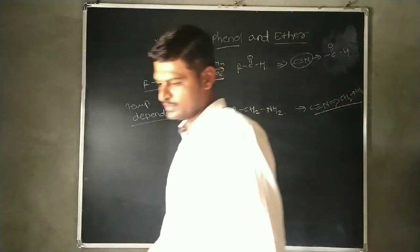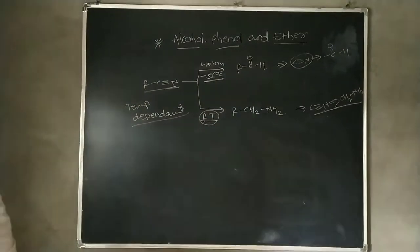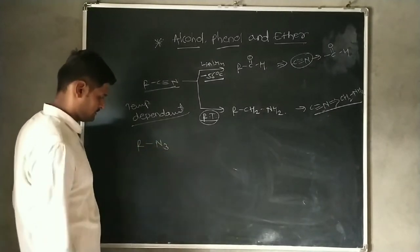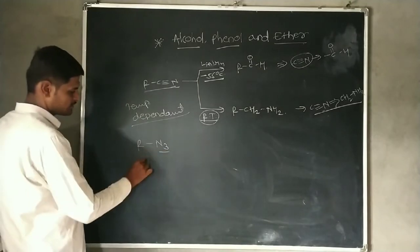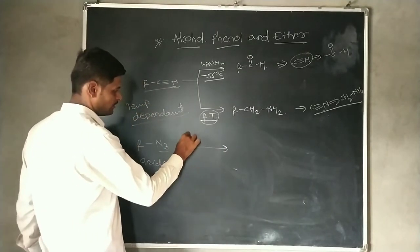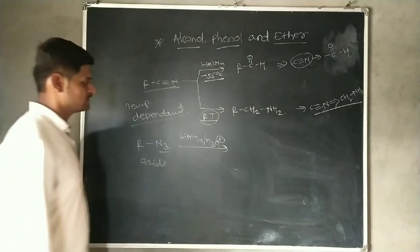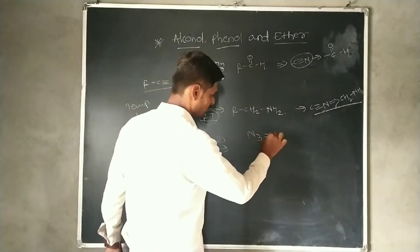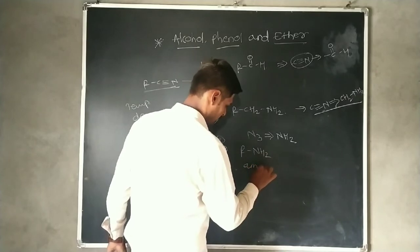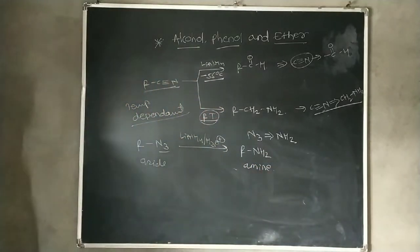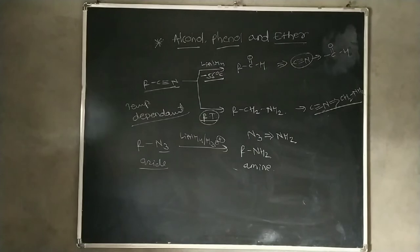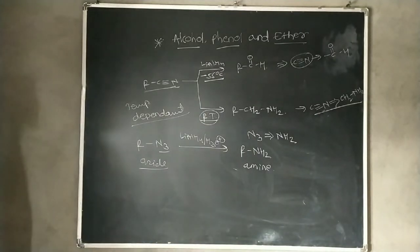The azide group (N₃) undergoes reduction reaction by using lithium aluminium hydride followed by acid hydrolysis. In this case, the N₃ group gets converted into an amine (NH₂), with loss of N₂.